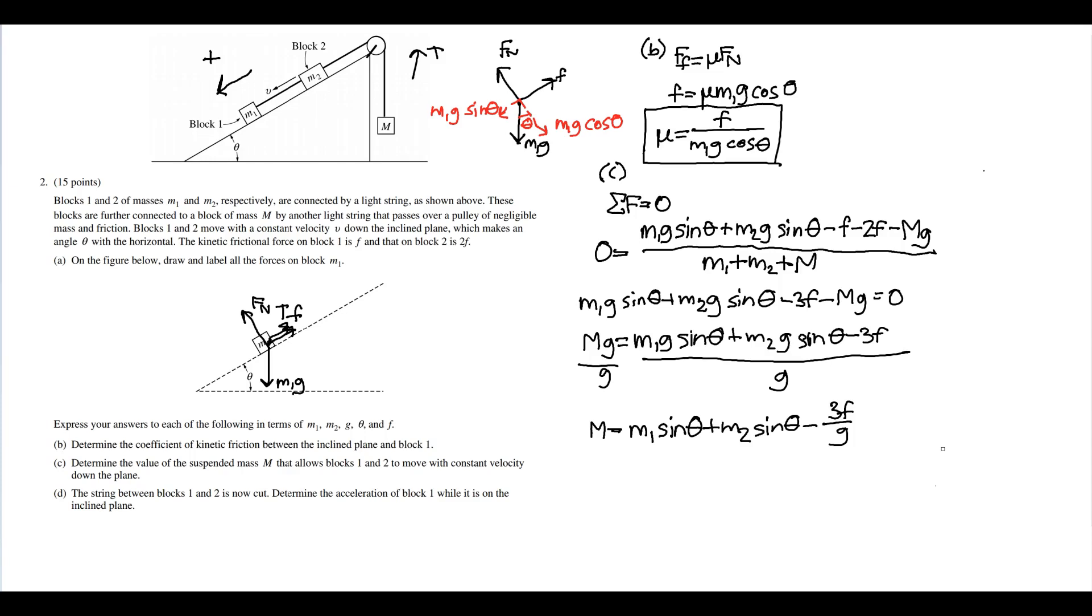Part D: The string between blocks one and two is now cut. Determine the acceleration of block one while it is on the inclined plane. So if the string's cut there's no more tension, and all the other blocks—so it'll just move as if it's just sliding down the incline.